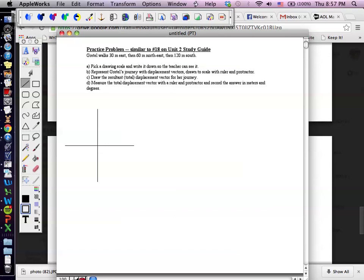Step A, pick a drawing scale and write it down. Let's use, these all are divided by 30, but that's a kind of large scale. How about 10? How about one drawing centimeter equals 10 meters? So here's the scale. One drawing centimeter equals 10 meters.